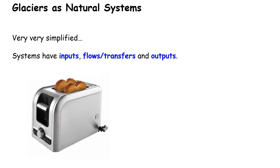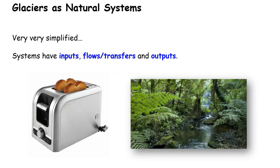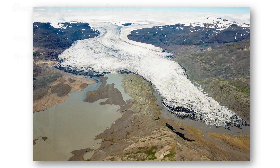Here's a really simple example. A toaster would have electricity and bread as inputs, and the flows or transfers will be the heating and cooking going on within the system, and the output is the toast — and could even be the smell of toast. If we look at a tropical rainforest, inputs are things like sunshine and precipitation, flows and transfers will be things like the water cycle or the nutrient cycle, and the outputs would be the scenery, the tall trees, the vegetation, oxygen, and sounds coming out of the system.